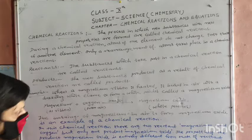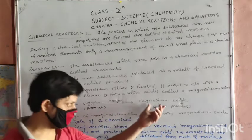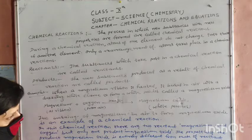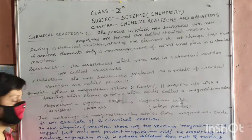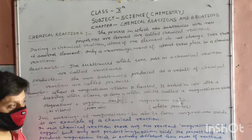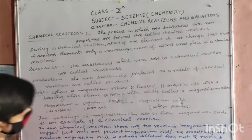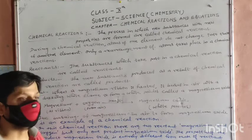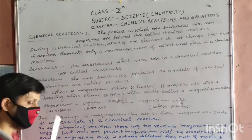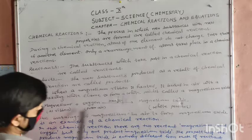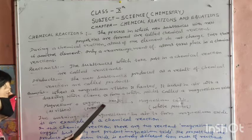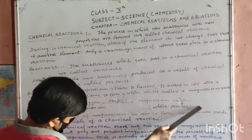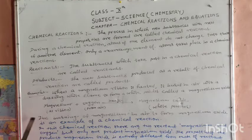Magnesium oxide is made of two elements: magnesium and oxygen. Magnesium metal and oxygen are the reactants. When heated, they produce magnesium oxide, a white powder — this is the new substance with new properties. The burning of magnesium in air to form magnesium oxide is an example of a chemical reaction.